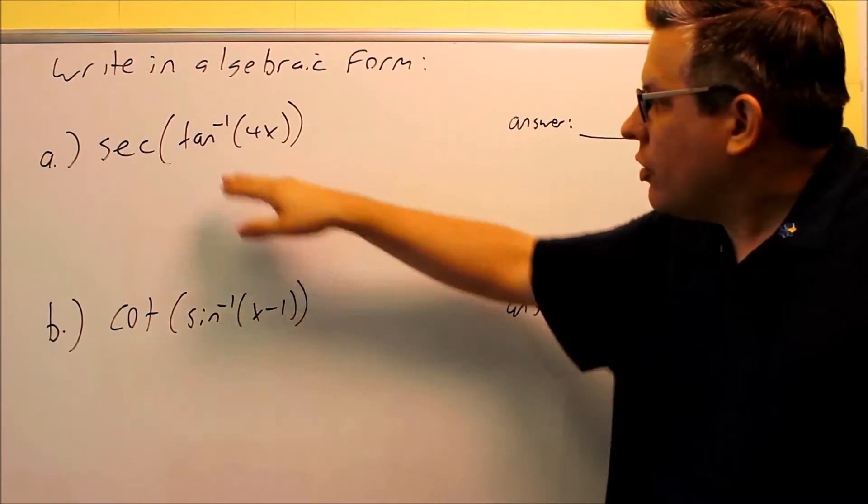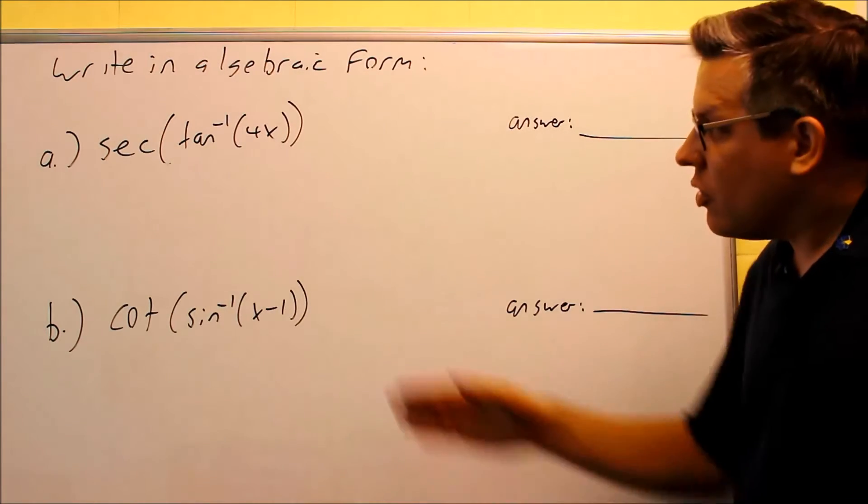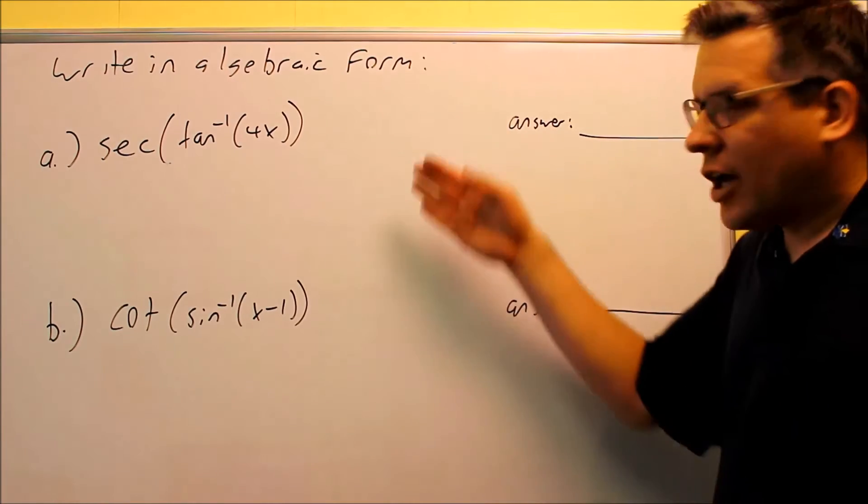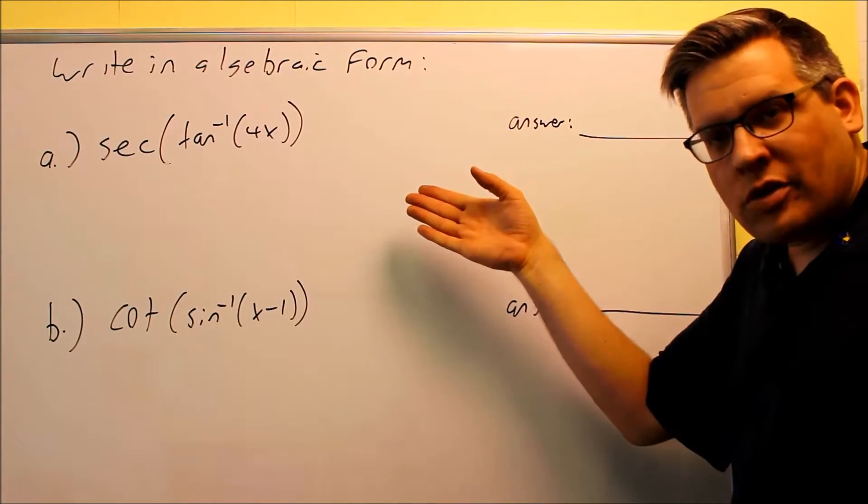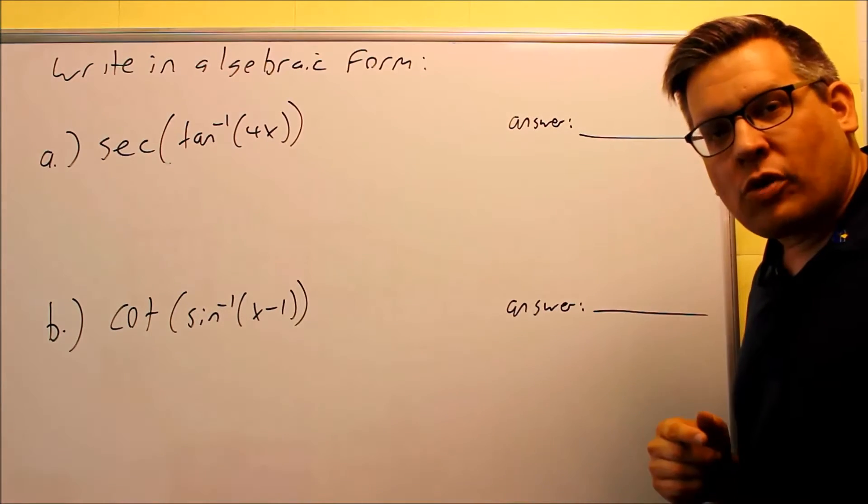Now, in order to do these, we're actually going to be solving them by drawing right triangles and labeling them using the definitions of the trig functions. But in order to do that, we have to know which quadrant the triangle is going to be in.